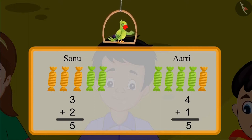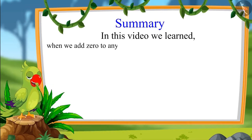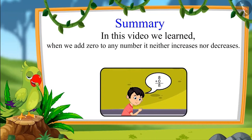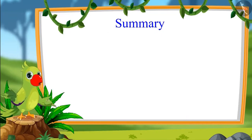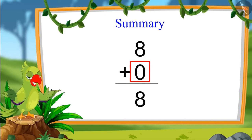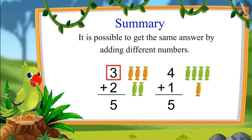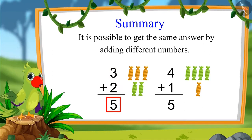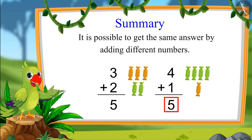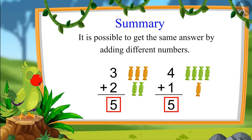This means that Sonu and Aarti both got exactly the same number of toffees. So children, it is possible to get the same answer by adding different numbers. When we add zero to any number, it neither increases nor decreases — for example, when we added zero to eight, the total remained eight. We also saw that adding different numbers can give the same answer: three plus two equals five, and four plus one also equals five.